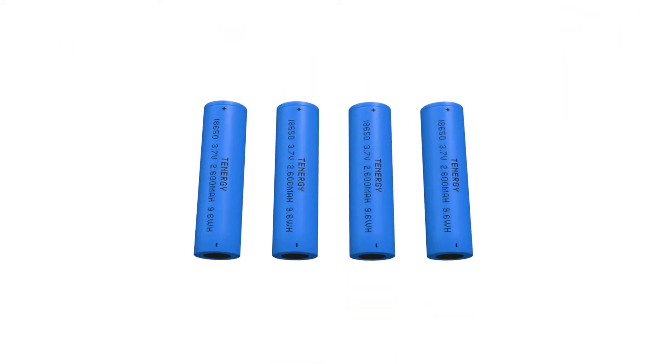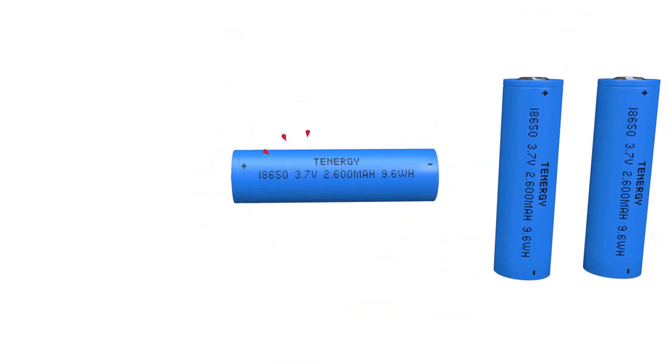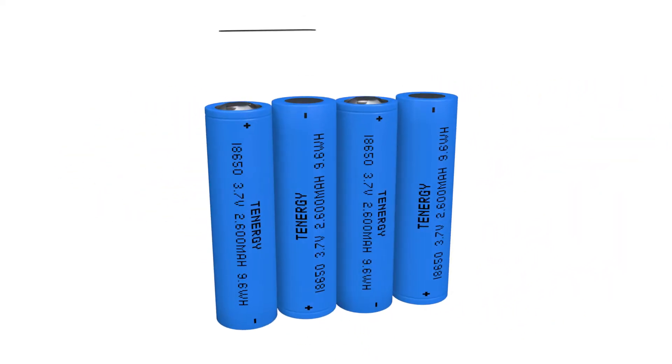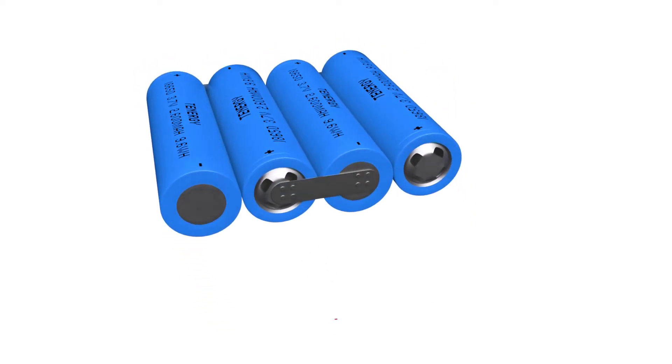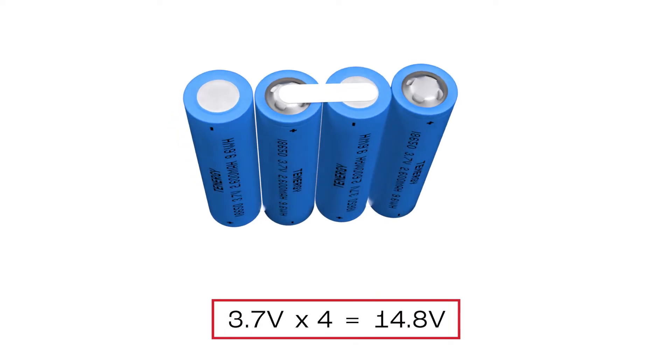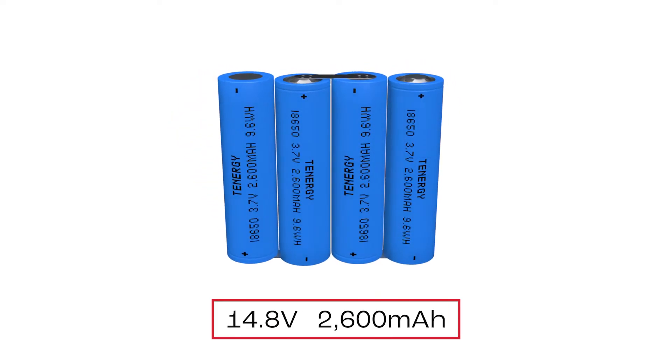For example, I have these four identical 18650 cells. Each of them has a voltage of 3.7 volts and a capacity of 2600 milliamp hours. If I connect them in series like this, I'll get a battery pack with a total voltage of 3.7 volts multiplied by 4 which will give me 14.8 volts and its capacity remains the same which is 2600 milliamp hours.